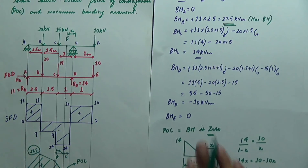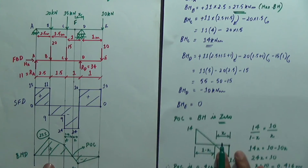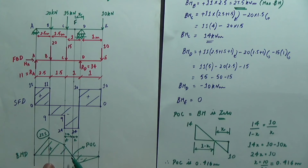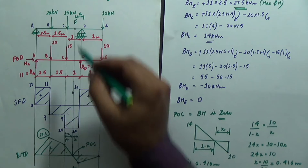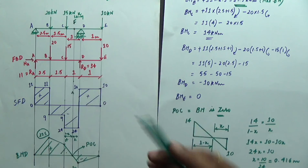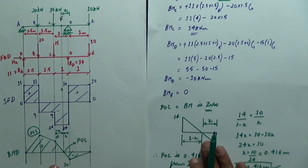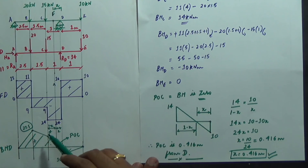Next, find the point of contra flexure. The point of contra flexure is where there is a sign change in the bending moment diagram — from positive to negative. This occurs between C and D. Mark it with an arrow touching the beam, label it F, and measure distance x from D. Use the similar triangle method to solve.